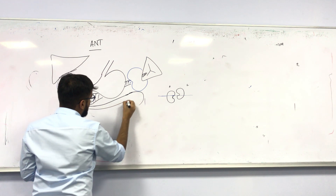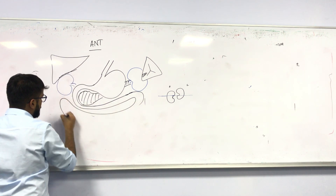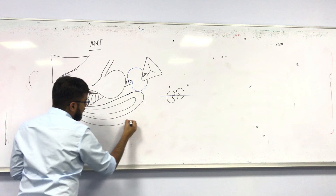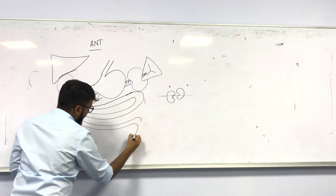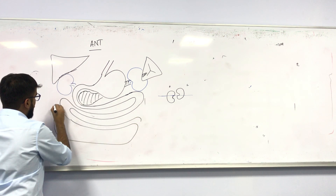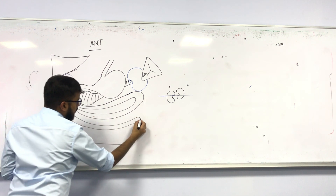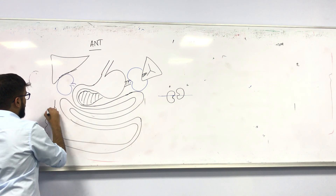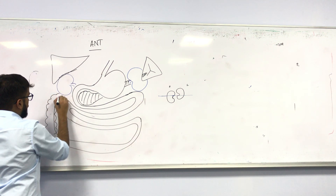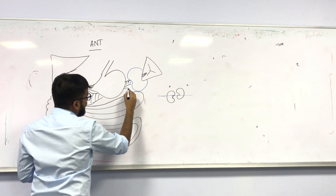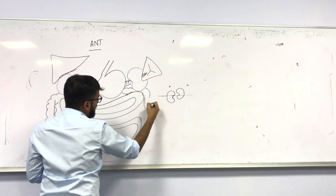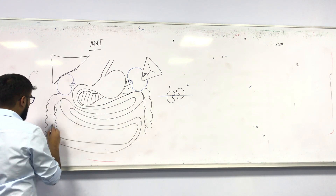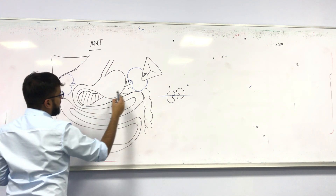This part is called the jejunum. Next we have the ileum, and then at the end we have the ascending colon, the transverse colon, and the descending colon — just a rough picture.